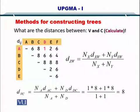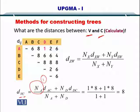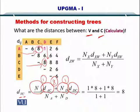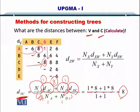Now let's consider the distance between V and C. To calculate it: the number of sequences in A is 1, and the distance between A and C is 8; plus the number of sequences in D, which is 1, and the distance between D and C is also 8. So 1×8 plus 1×8 divided by 2 gives the same value. The distance between V and C is 8.